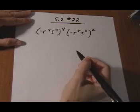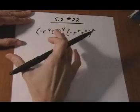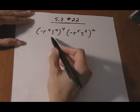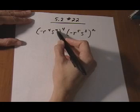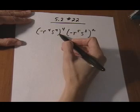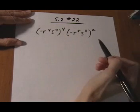5.2 number 22. Here we have a whole bunch of factors being multiplied together and they have exponents, plus there's a parentheses raising to another exponent also.